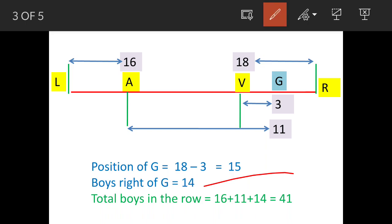So position of G from the right will be 18 minus 3, equals 15. This is the position of G. The boys to the right side of G are going to be 14. So total boys in the row will be 16 plus 11 plus 14, equals 41. This is our answer.